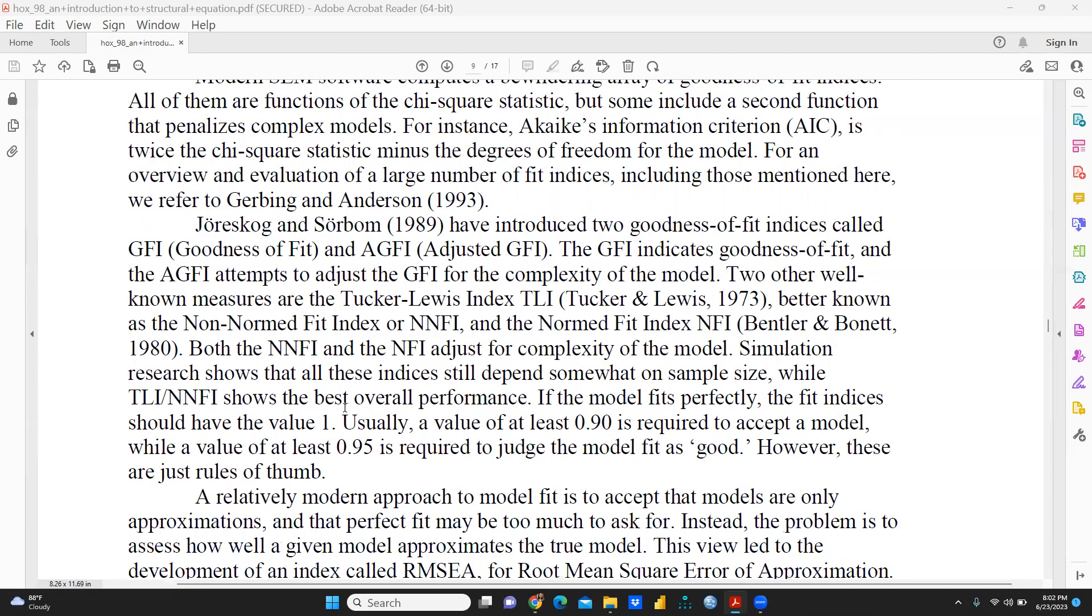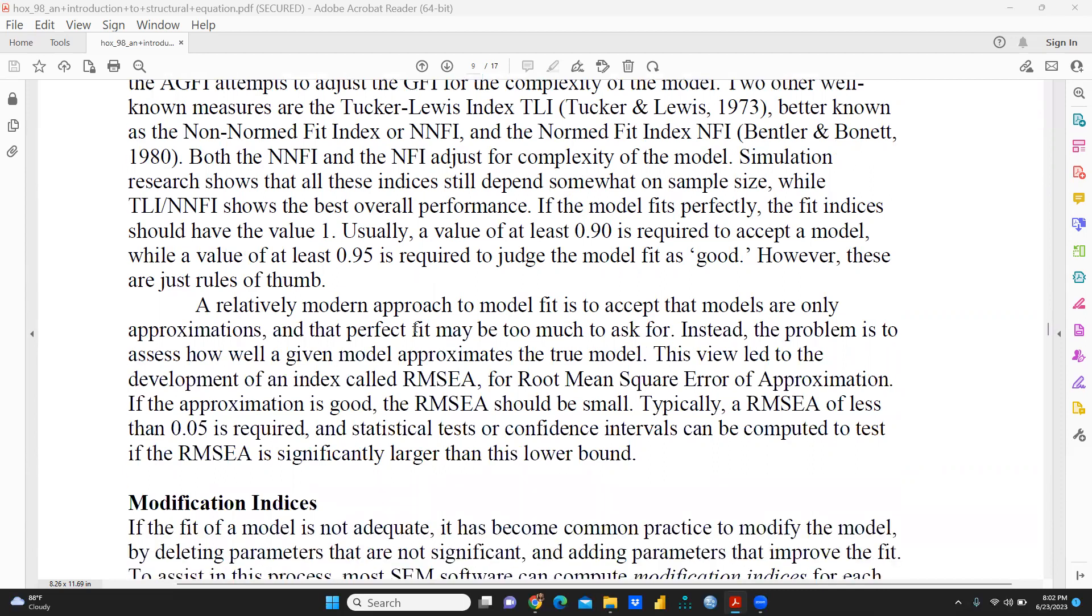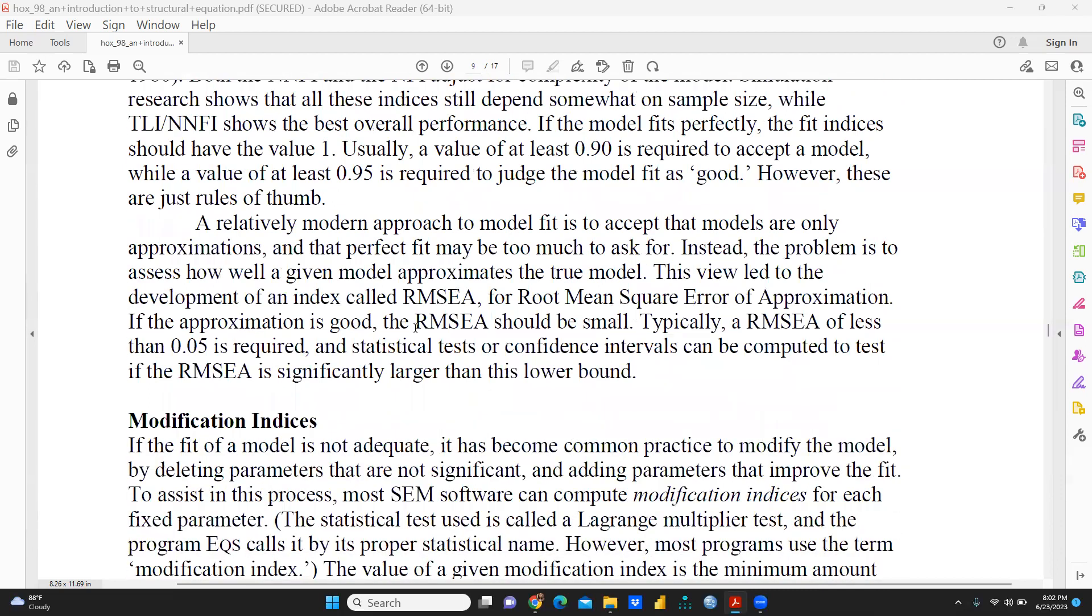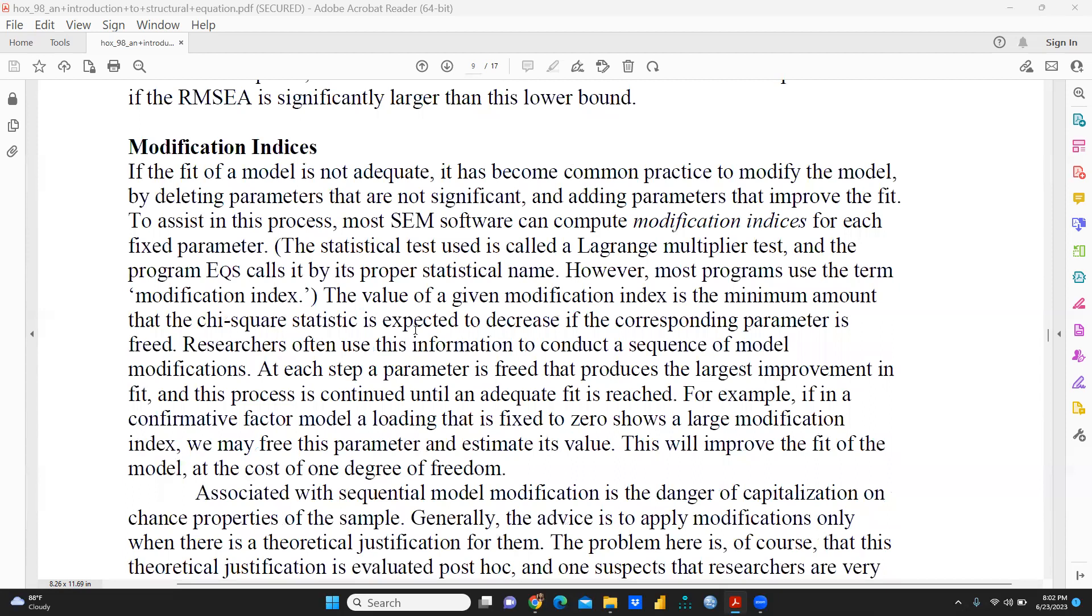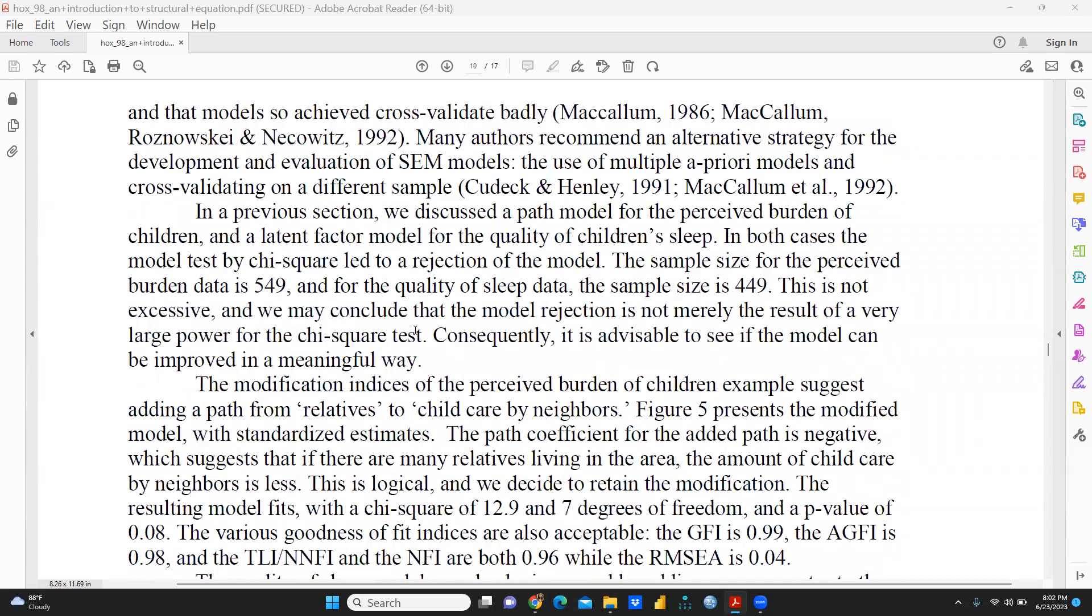And all these things—this is the RMSEA. RMSEA means we are talking about root mean square error of approximation. If the approximation is good, the RMSEA should be small. So typically, RMSEA of less than 0.05 is required, and a statistical test or confidence interval can be computed to test if the RMSEA is significantly larger than the lower bound.